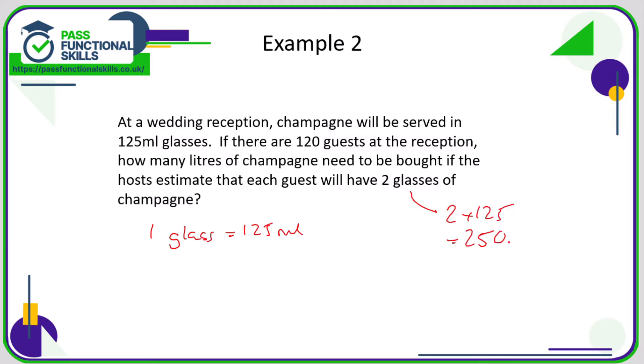Now if there are 120 guests, that is going to be 120 lots of 250 millilitres, and 120 times 250 comes to a total of 30,000 millilitres. Now we want the answer in litres, so we know that one litre equals one thousand millilitres. Litres to millilitres, we are multiplying by one thousand. Millilitres to litres, we are dividing by one thousand.